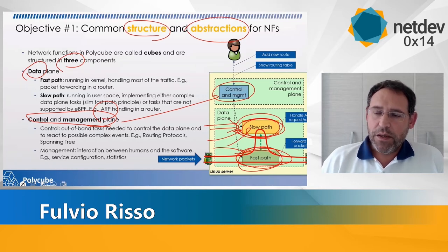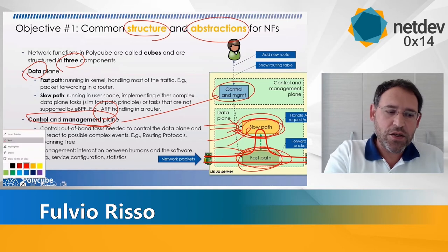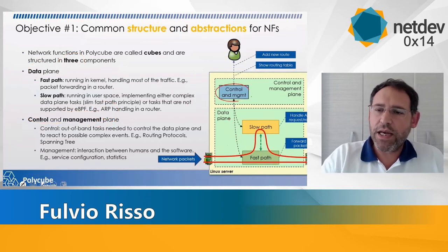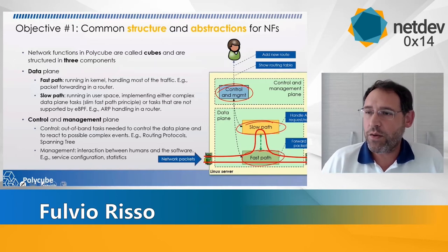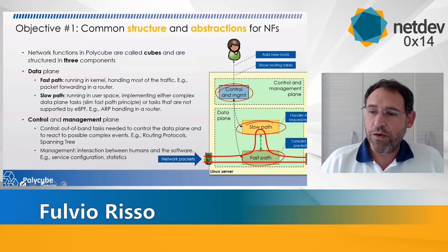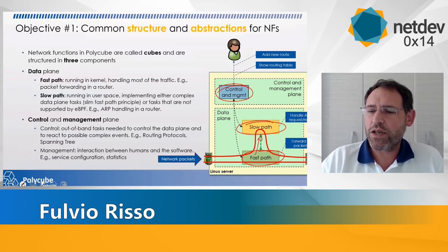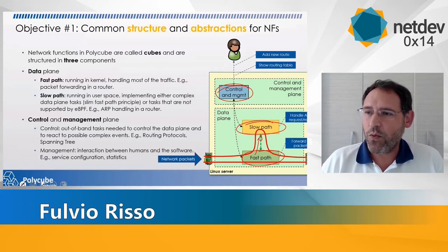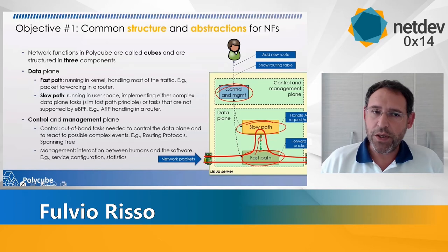The programmer who creates this service has to concentrate on these three components: slow path, fast path, and control and management. All the interaction between those components is handled by the Polycube framework automatically. You just say 'send this packet to the slow path,' and by magic the packet arrives on the slow path. All the glue logic is handled by Polycube.